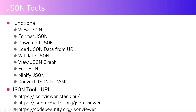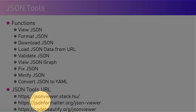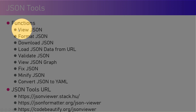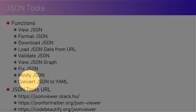Now let's look at JSON tools. I've listed three different URLs — I'm not promoting them, I just found them very useful and easy to use. These tools let you view JSON, because sometimes JSON can be tricky to view as data size grows. You can format, download, load JSON from a URL, validate it, view a JSON graph, fix JSON, minify it, or convert JSON to YAML. This will be useful for many cases, such as working with pipelines.